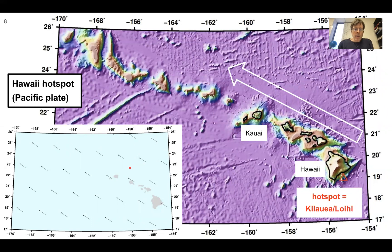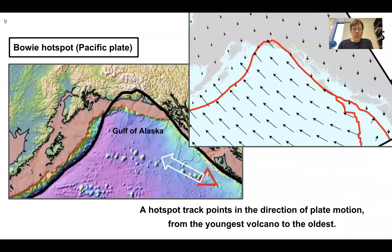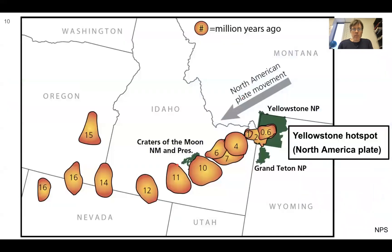Here was the summary figure from Hawaii, pointing from Kilauea-Loihi — the youngest — toward the older islands or volcanoes. This shows the motion of the plate model, which is parallel to the island chain. The Bowie hotspot is in the Gulf of Alaska, shown here with the approximate direction of the hotspot track and plate motion. And Yellowstone shows the plate motion pointing toward older sites where volcanism occurred.